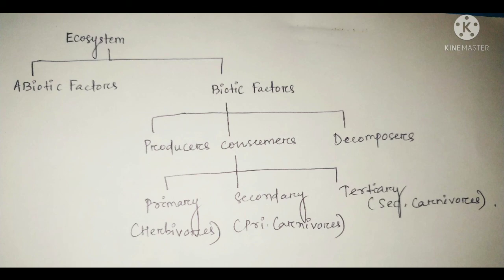This is the diagram that represents the types of ecosystem. Ecosystems have biotic factors and abiotic factors. Under biotic factors, producers, consumers, and decomposers are present. Under consumers, primary consumers are herbivores, secondary consumers are primary carnivores, and tertiary consumers are secondary carnivores.